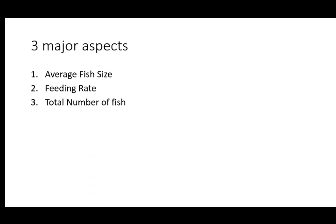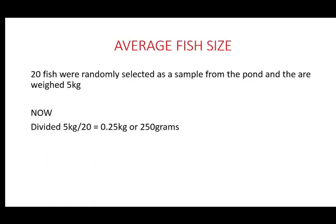How do we determine the average fish size? Average fish size can be determined by taking a random sample from the pond — you take some fish from the pond, measure their weight, and divide the measured weight by the total number of sample fish. For example, if 20 fish were randomly selected and they weigh 5 kg total, divide 5 kg by 20, and you get 0.25 kg or 250 grams as your average fish size.